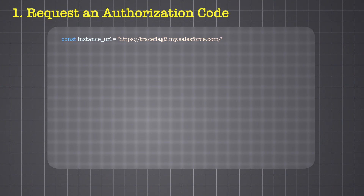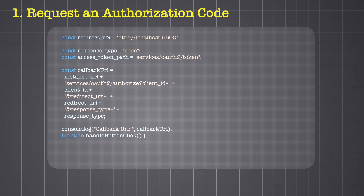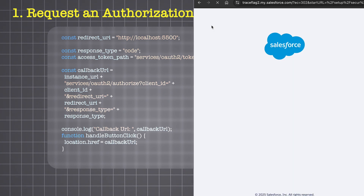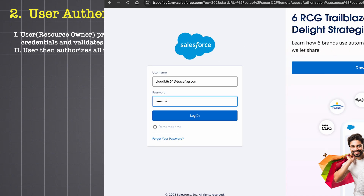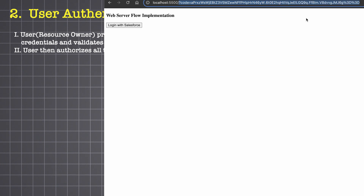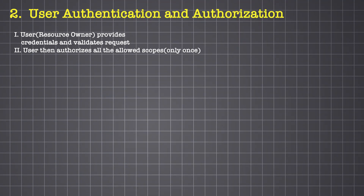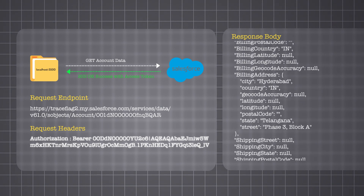Let's see the same implementation in JavaScript. Here we are constructing the URL, and on button click we are redirecting to the authorization URL. Now let's go to our website and attempt to login — yes, it's working! We will now try to enter our credentials, which is step two: user authentication and authorization. After authentication, we must authorize access permissions for the application. Upon successful authorization, Salesforce grants an authorization code as a parameter in the callback URL. This completes step three — Salesforce grants the authorization code.